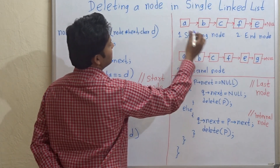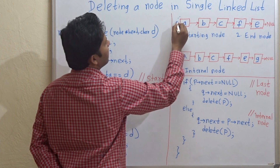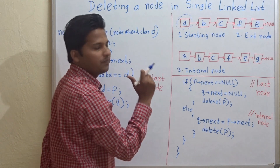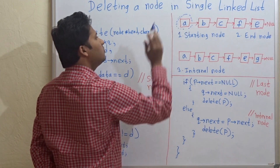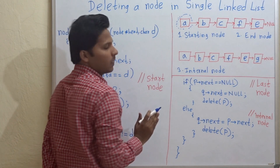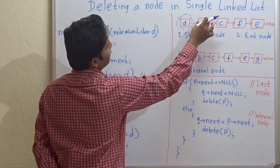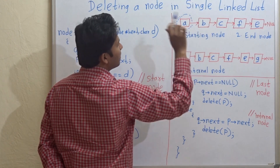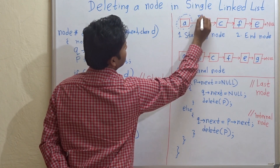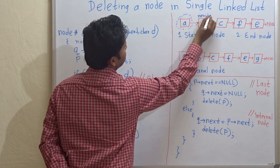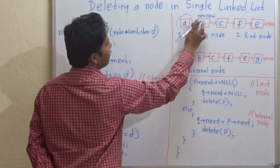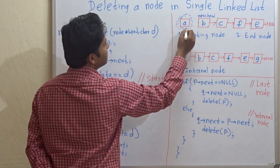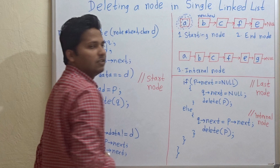Starting node means, for example, in this linked list, A is the starting node — the head node of the linked list. For deleting the head node, we have to make the next node of the head the new head. Then we have to delete the old link and free that memory.